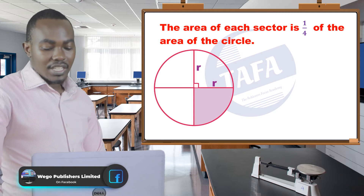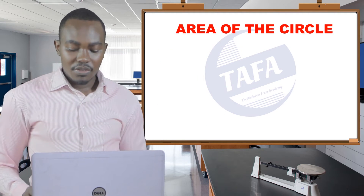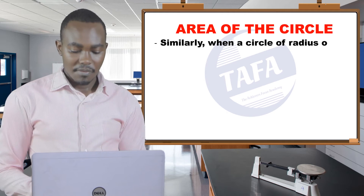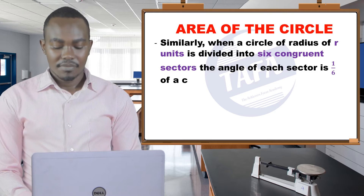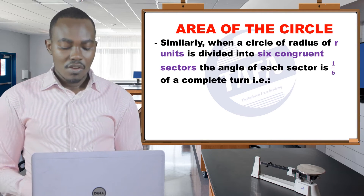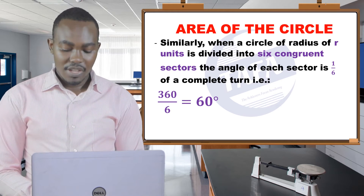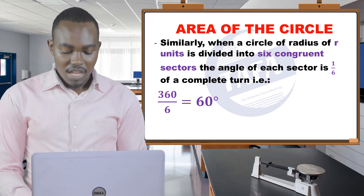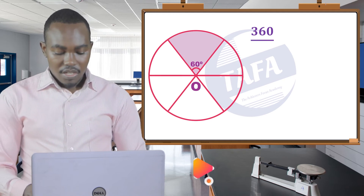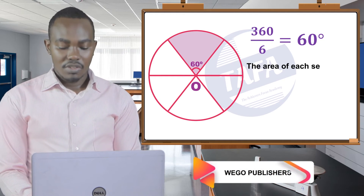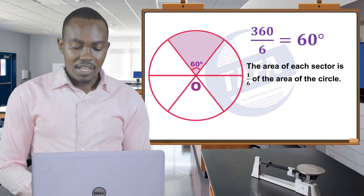The area of each sector is a quarter of the area of the circle. Similarly, when a circle of radius r units is divided into six congruent sectors, the angle of each sector is a sixth of a complete turn — that is, 360 degrees divided by six, giving 60 degrees. So the area of each sector equals a sixth of the area of the circle.